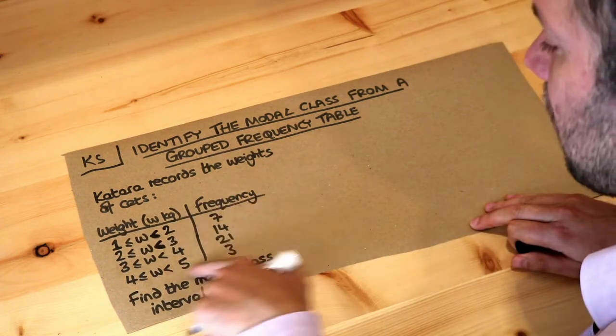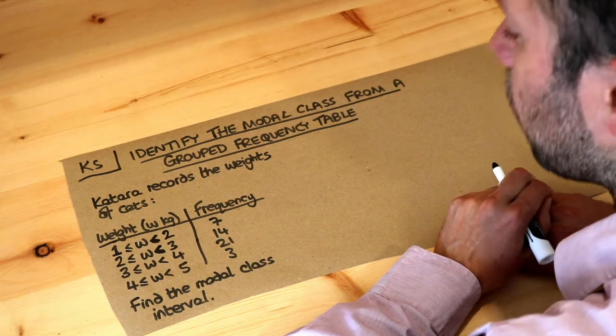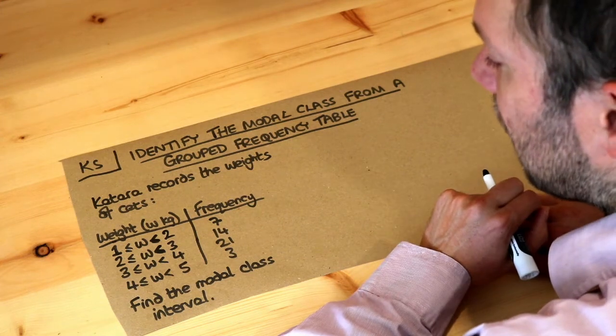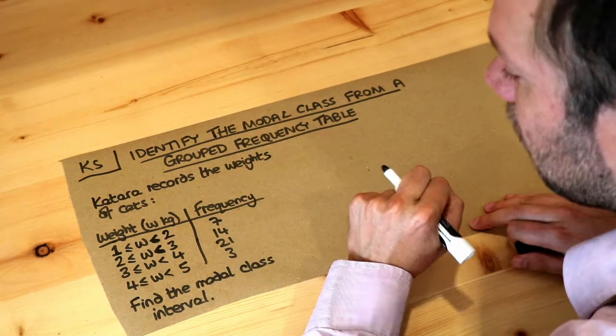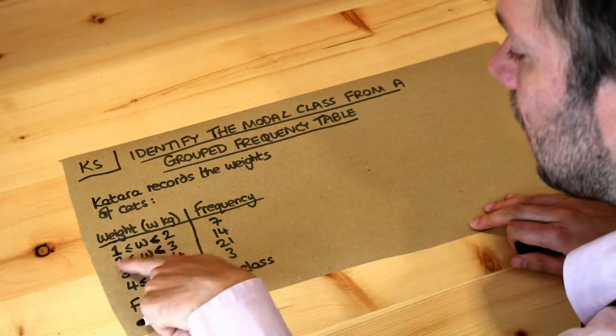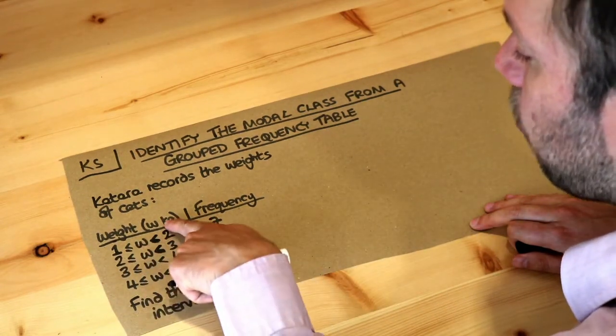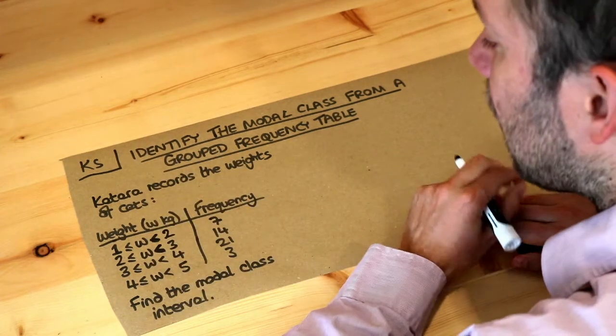Now we have a grouped frequency table here and we explored what a grouped frequency table was in a previous video, but it basically means that we've taken different items, observed their weight and put them into different ranges. So we have seven items with a weight between one and two kilograms, etc.